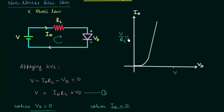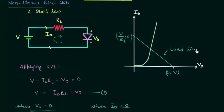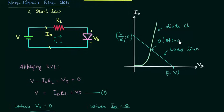Now we have two points. The first point is (0, V/RL) and the second point is (V, 0). If we connect these two points, we get a straight line, and this straight line is called the load line of the diode. Plotting the diode characteristics alongside the load line, we find an intersection, and this intersection is called the Q point or operating point.